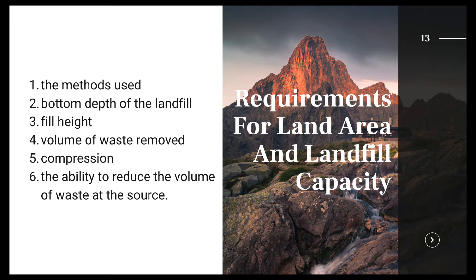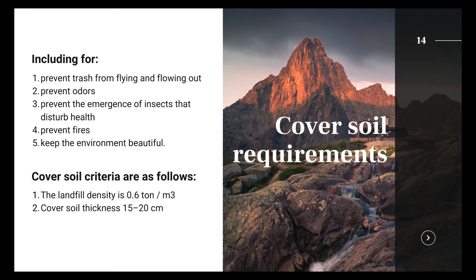The capacity for land area is influenced by the method used, bottom depth of the landfill, fill height, volume of waste removed, compression, and the ability to reduce waste volume at the source. Cover soil between layers covers the garbage after it reaches a height of 0.8 meters and has been compacted. The landfill density is 0.6 tons per cubic meter and cover soil thickness is 15 to 20 cm.